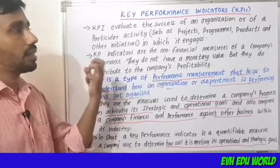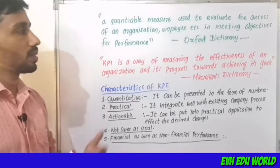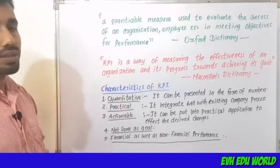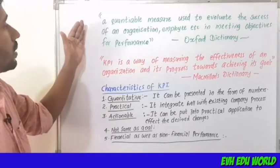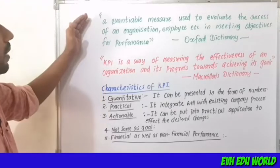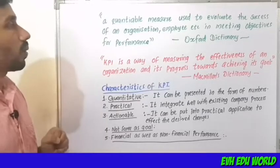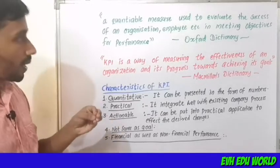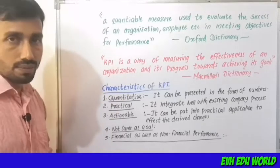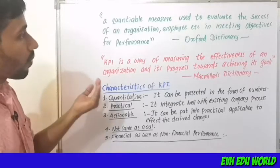The Oxford Dictionary defines KPI as: a quantifiable measure used to evaluate the success of an organization, employee, etc., in meeting objectives of performance.